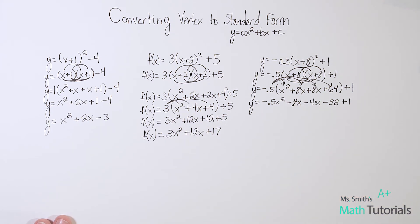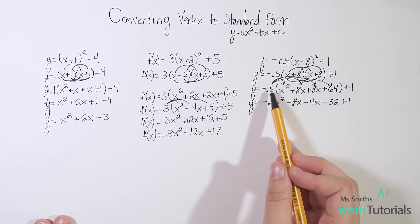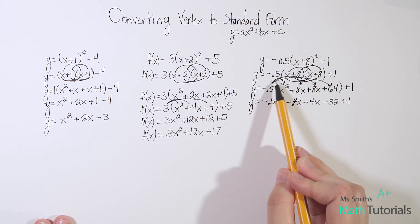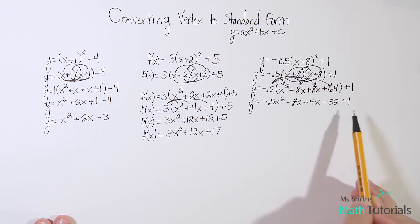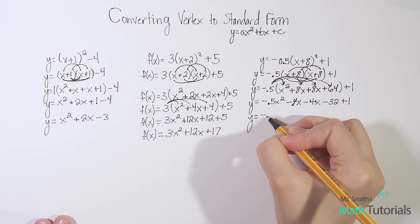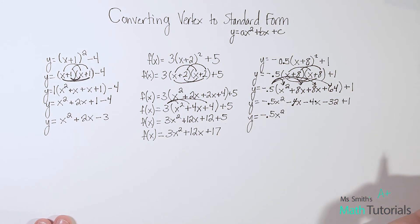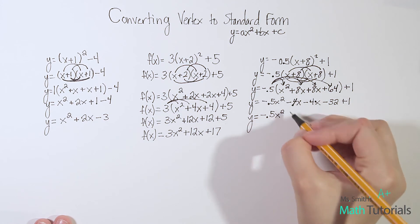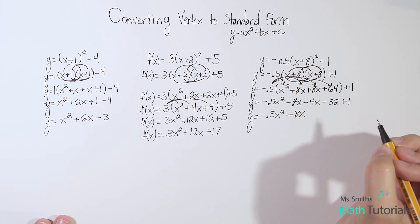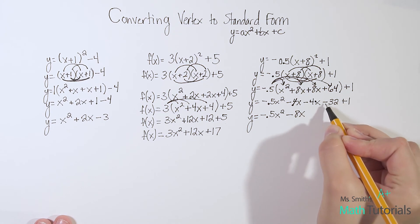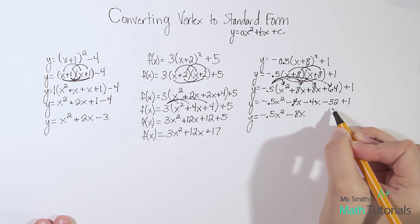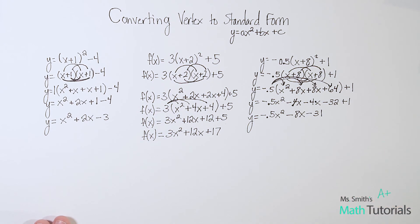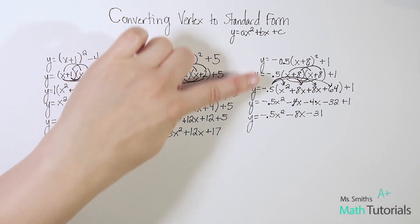Now you may notice I didn't combine my like terms there like I did here, and that's okay. I created a little bit more work for myself by having to multiply twice instead of once. It's okay. So if you forget to combine your like terms before you start multiplying like I just did, that's okay. You will just combine them at the end. So we've got -0.5x². And -4x - 4x, those are our like terms, we're going to go ahead and combine them now. That gives us -8x. And then we will combine these like terms, -32 + 1, which gives me -31. So there we went from vertex form to standard form.